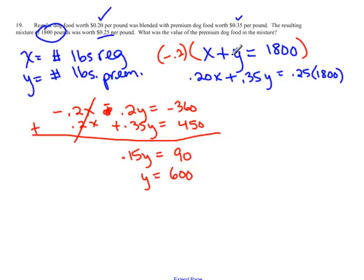Okay, plug in to the original, and you get x plus 600 equals 1,800. Subtract the 600, and you get x equals 1,200.